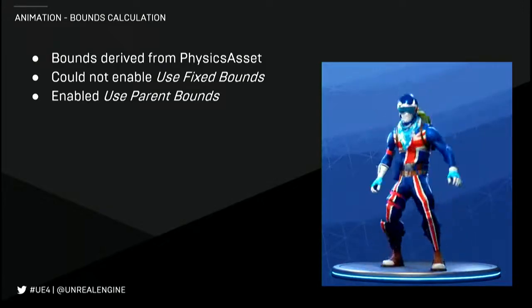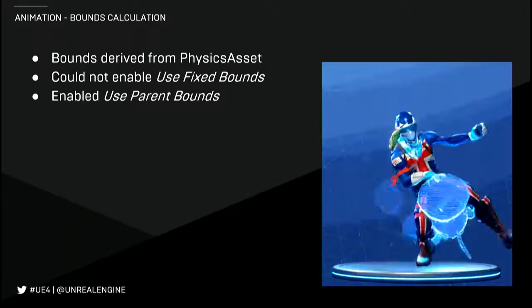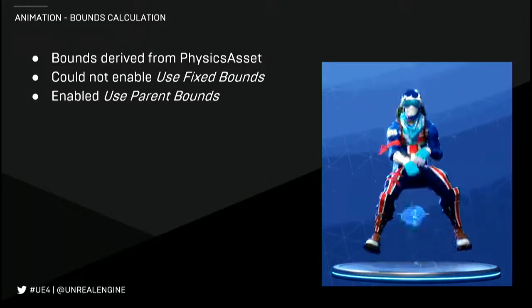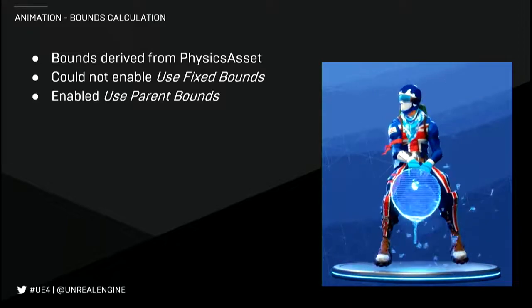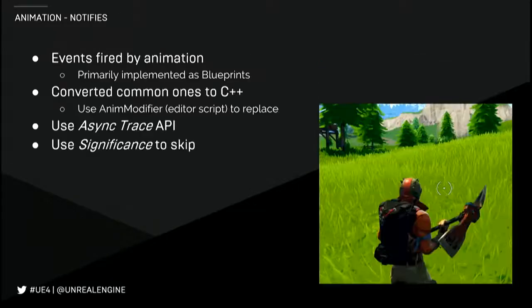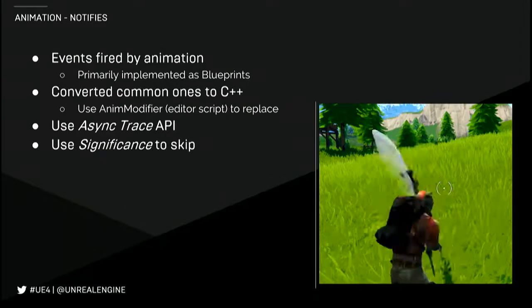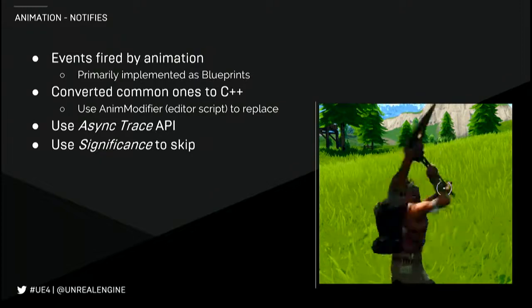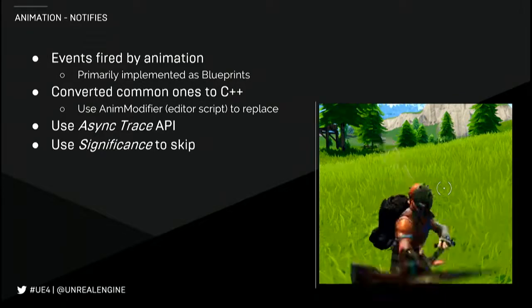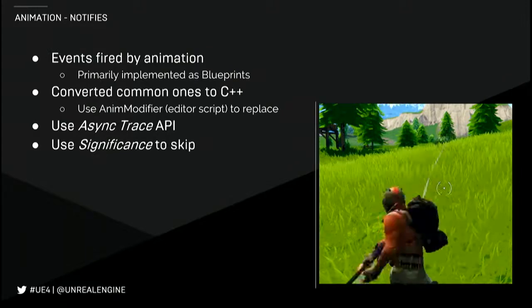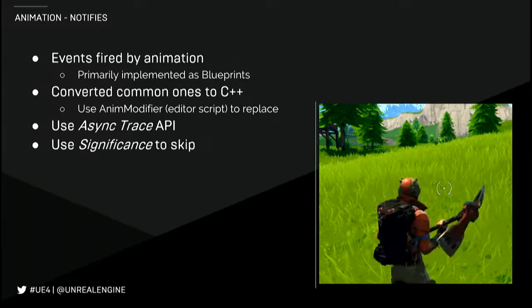Another part of the animation process is calculating the bounding box for a mesh. We can't use a fixed bounding box because emotes move the character around quite a lot. We do calculate bounds for the character each frame using the collision shapes, but for all the attachments to the character we just inherit the bounds from the parent — so we only have to calculate one bounding box, not five for every character. Animation notifies are little events attached to animations that fire logic as the animation plays, used for footstep sounds, particles, or trails behind an axe. These were originally implemented in Blueprints, but we wanted to convert those into C++ instead. We used an anim modifier — an editor script — to run through all those and switch them over.